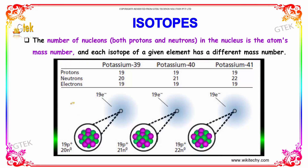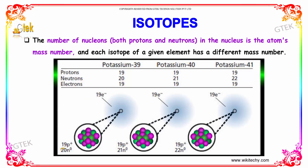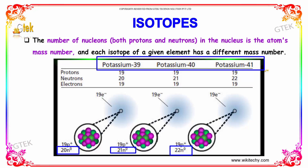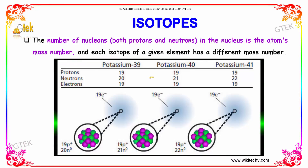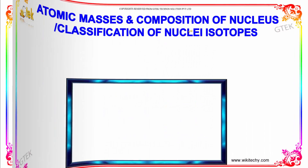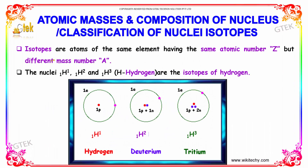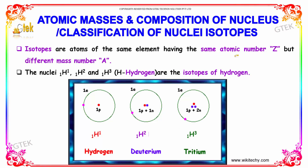You are able to see potassium, which has 19 electrons, 19 protons, and 20 neutrons. Over here is 21 neutrons, and over here is 22 neutrons. But everything is called potassium by a common name. Thus, existing with a different mass number is nothing but isotopes. Isotopes are atoms of the same element having the same atomic number Z but a different mass number A.